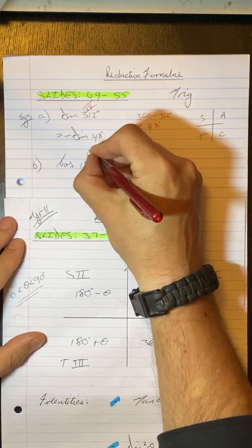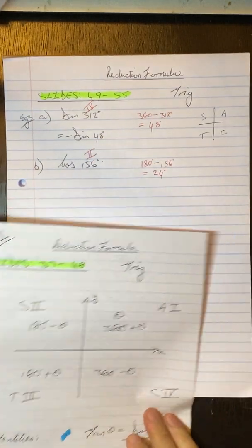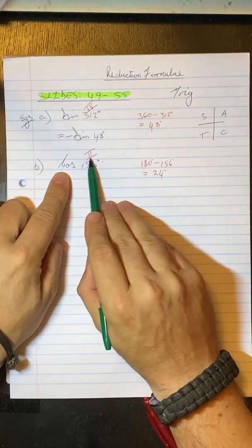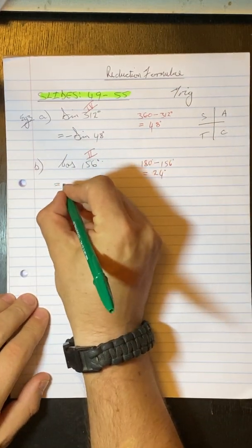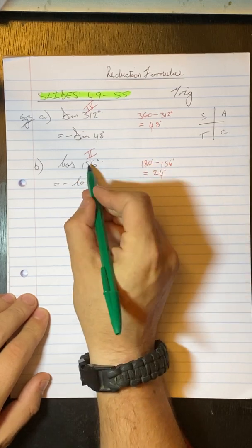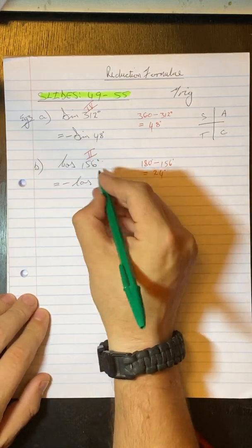So what we're saying there is we're saying 180 minus 24 gave us that 156. So the next thing I know that this is in the second quadrant. Okay. So cos in the second is negative. So this would be negative cos. And we can reduce that angle to 24.